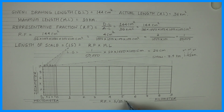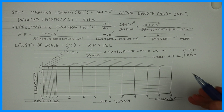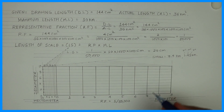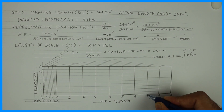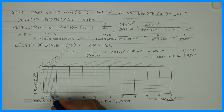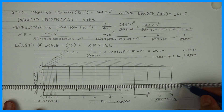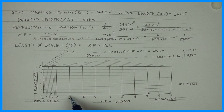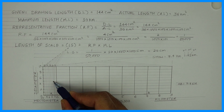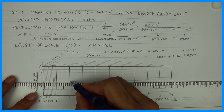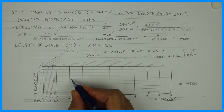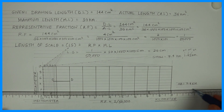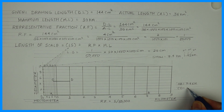Now we need to mark 7.4 kilometer and 1.25 kilometer. For 7.4 kilometer: take 7 kilometer and 4 hectometer. From there you will have line AB, which is 7.4 kilometer. For 1.25 kilometer: take 1 kilometer and 2 hectometer, and on the diagonal joining those points go 5 places up to get 5 decameter. So line CD is 1.25 kilometer.